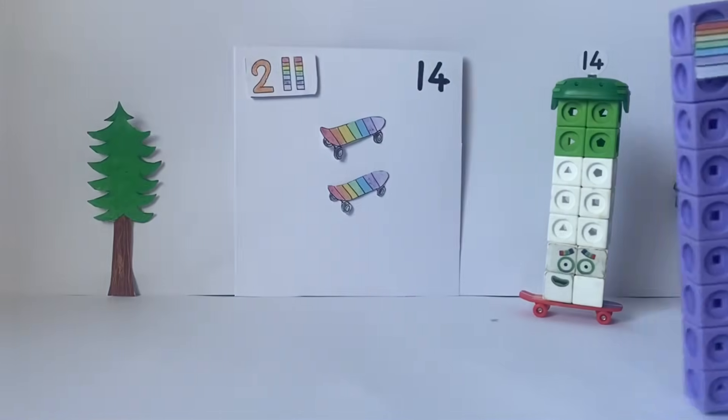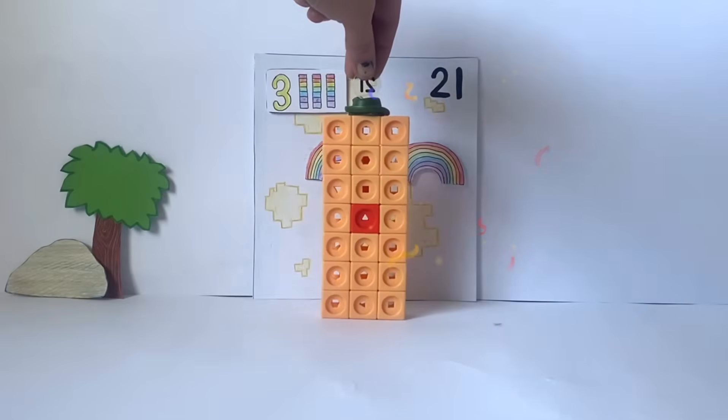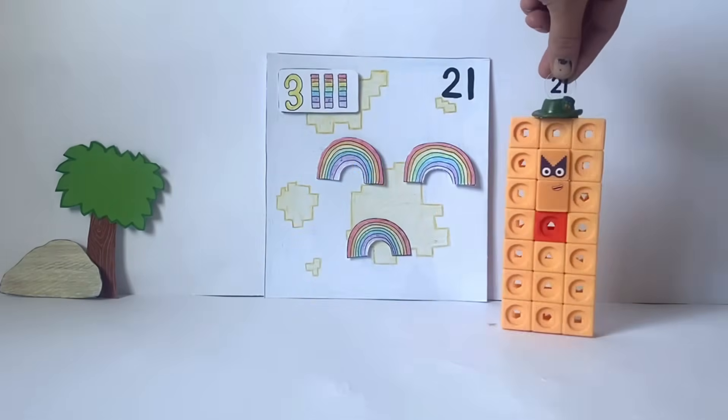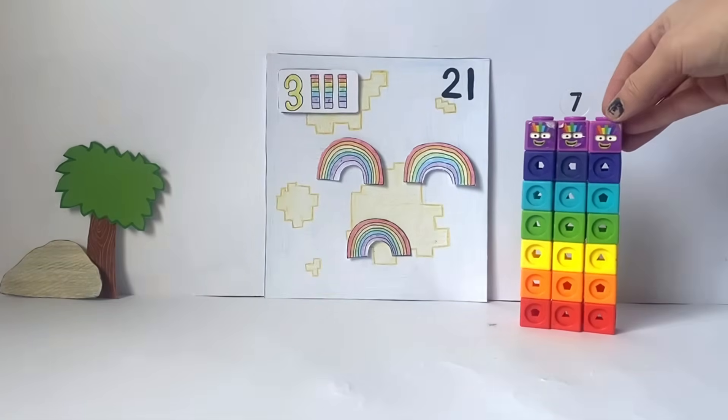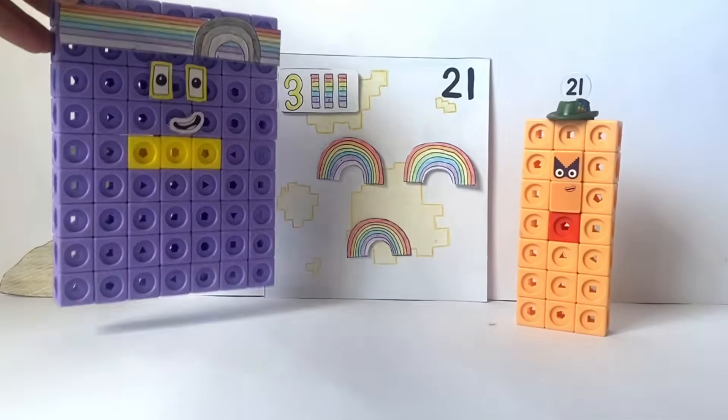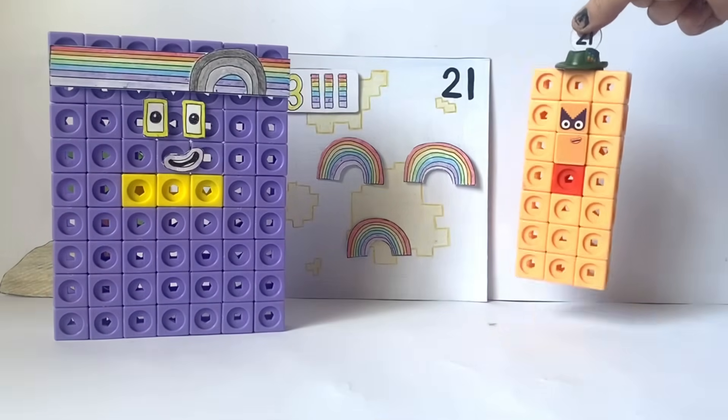What's that? Three sevens! Three rainbows! Hello, Twenty-One! Lovely map! Thank you, 63!